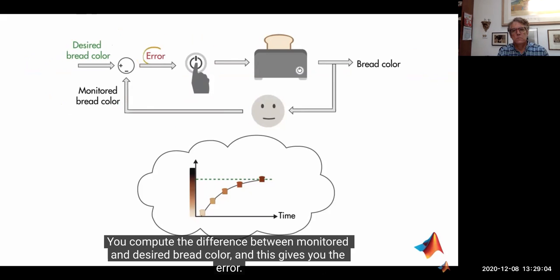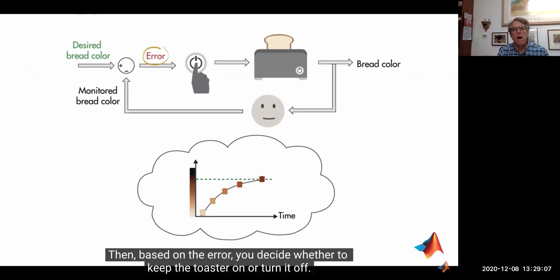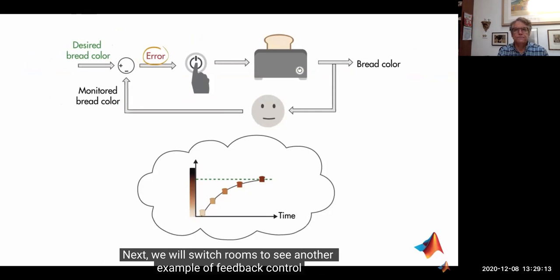If you project what you think in your mind onto the closed-loop structure, we get the complete feedback loop. This part represents the comparison you make between what you see and what you want — you compute the difference between monitored and desired bread color, and this gives you the error. Then, based on the error, you decide whether to keep the toaster on or turn it off.